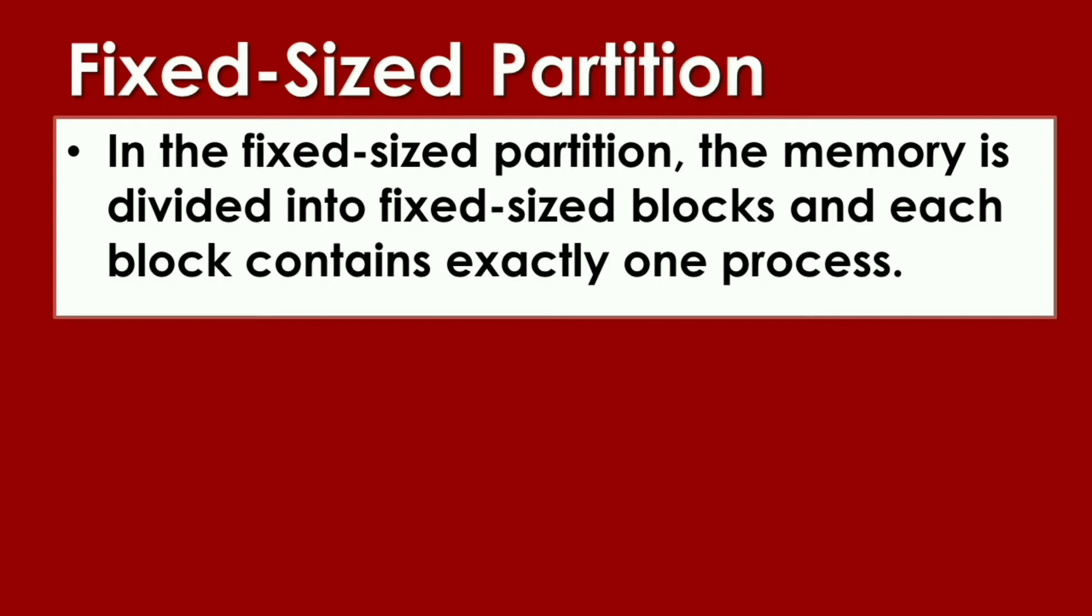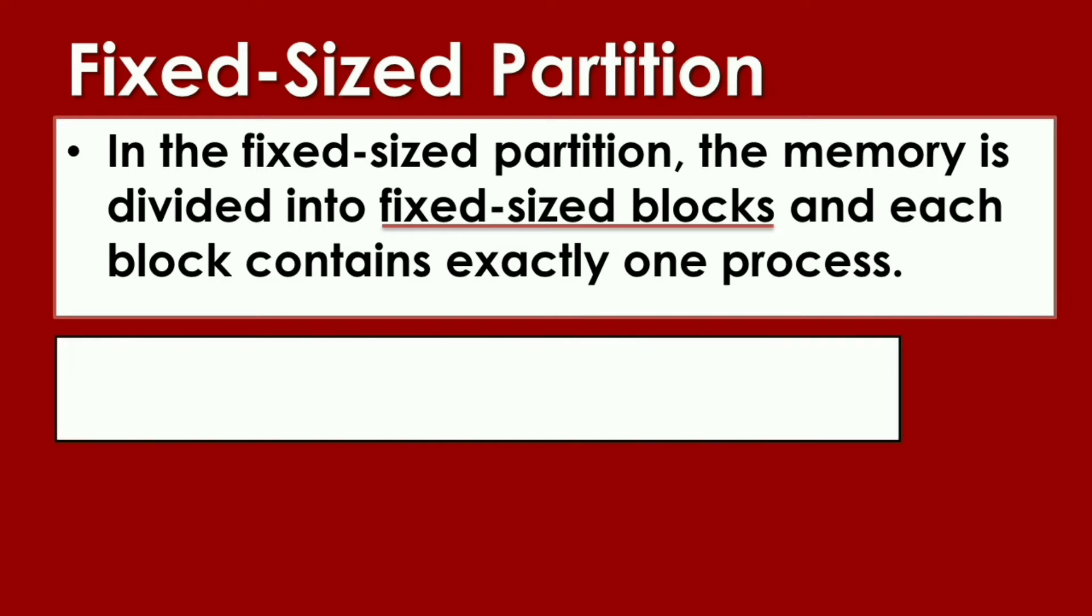In Fixed Size Partition, the memory is divided into Fixed Size Blocks and each block contains exactly one process. From the word Fixed Size, it means the memory allocation is fixed. Let's say this is the memory. The operating system will divide the memory into different sizes. Let's say, these are the sizes: 30, 10, 15, 40, and 5.